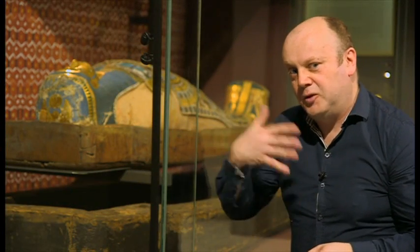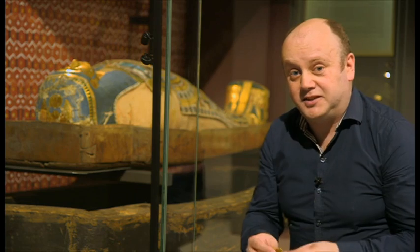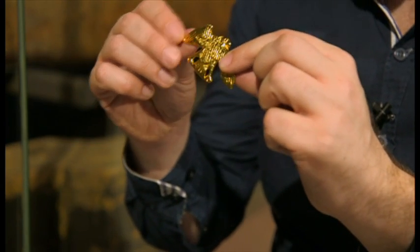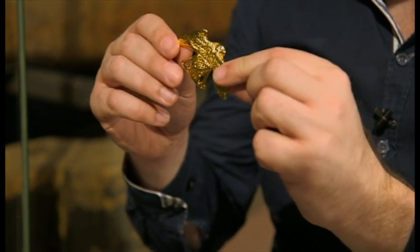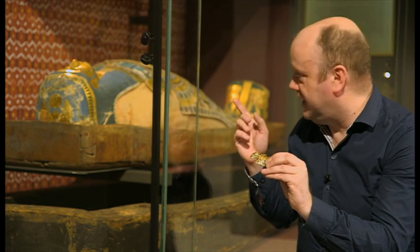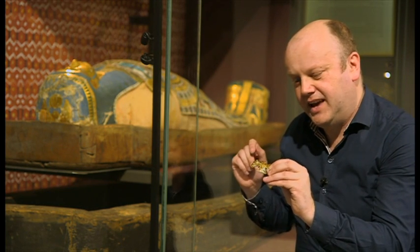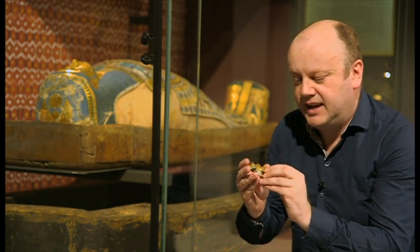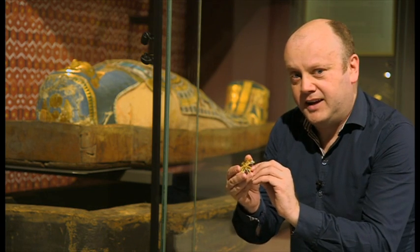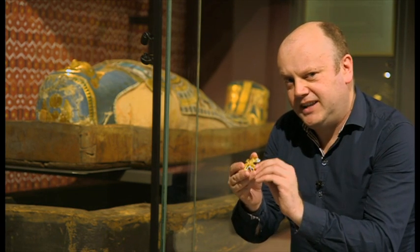CT scanning Nezwayu doesn't just allow us to unwrap the mummy, it also allows us to find objects like this. This is a 3D printout of a falcon-shaped amulet that was seen inside the mummy—the real one is still in there—during the scanning process. It was thought it was put there to protect Nezwayu in the afterlife.